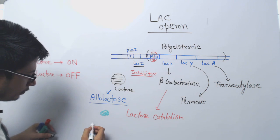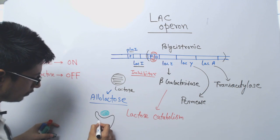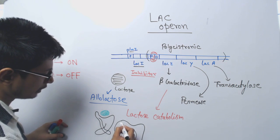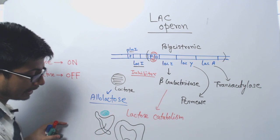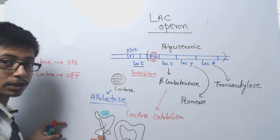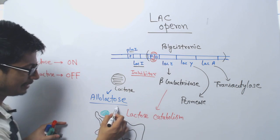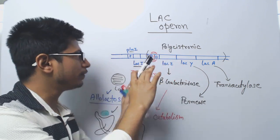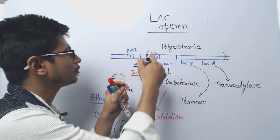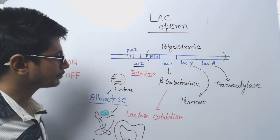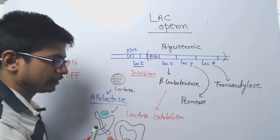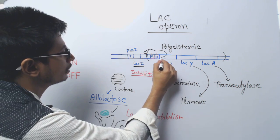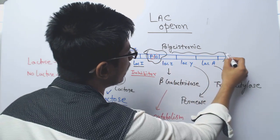When allolactose attaches to the inhibitor, let's say the inhibitor structure is changed. Normally the inhibitor has a certain structure, but upon binding with allolactose, the structure changes. The active site with which the inhibitor was interacting with the promoter region is now blocked after the binding of allolactose. As a result, the inhibitor which was bound to the promoter region drops out. The promoter is now free because allolactose has wiped the inhibitor out from the promoter. RNA polymerase can now bind to the promoter and transcribe the structural genes.